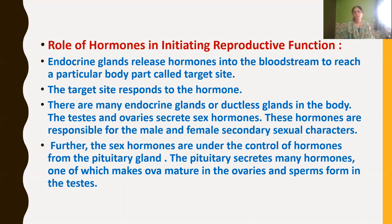Hormones are chemical secretions secreted by endocrine glands. There are many endocrine glands or ductless glands in our body. The testes and ovaries are endocrine glands — they secrete sex hormones. The testes secrete the male sex hormone called testosterone, and ovaries in females secrete the female sex hormone called estrogen. These sex hormones, testosterone and estrogen, are responsible for the male and female secondary sexual characters.